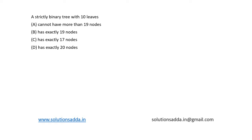This is a question from data structures: a strictly binary tree with 10 leaves. Four options are given — cannot have more than 19 nodes, has exactly 19 nodes, exactly 17 nodes, and exactly 20 nodes.